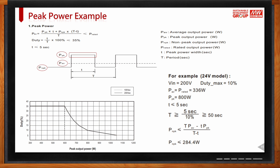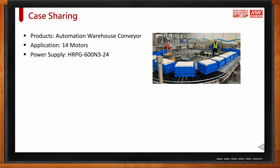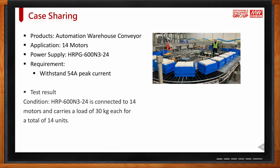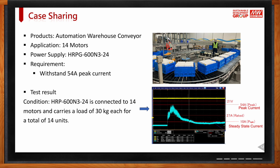What would a typical application look like? A customer has an automation warehouse conveyor with 14 motors and peak current of 55A. From the oscilloscope, the highest current required is 54A at 24V motor voltage. We suggested the customer use the HRP-600-N3-24. This power supply can handle all 14 motors, and as you can see from the graph, no voltage drop occurred because this power supply handles the peak power demand at startup for all 14 motors.